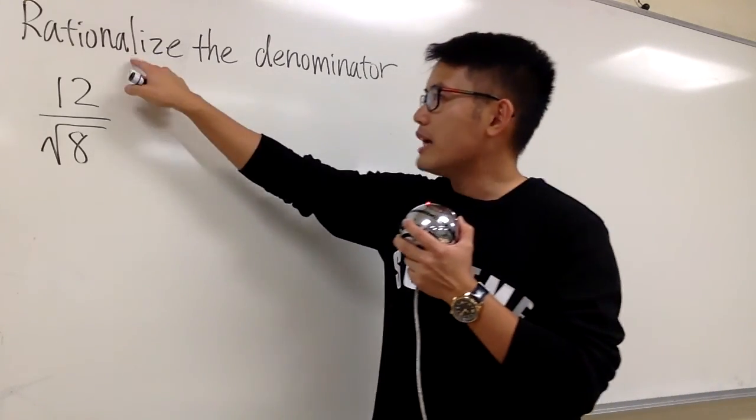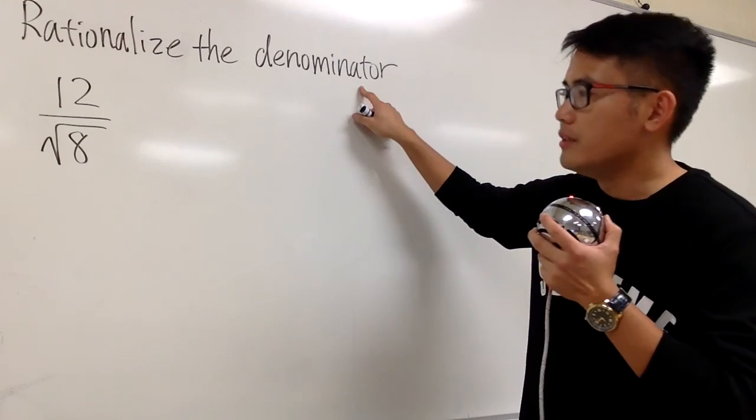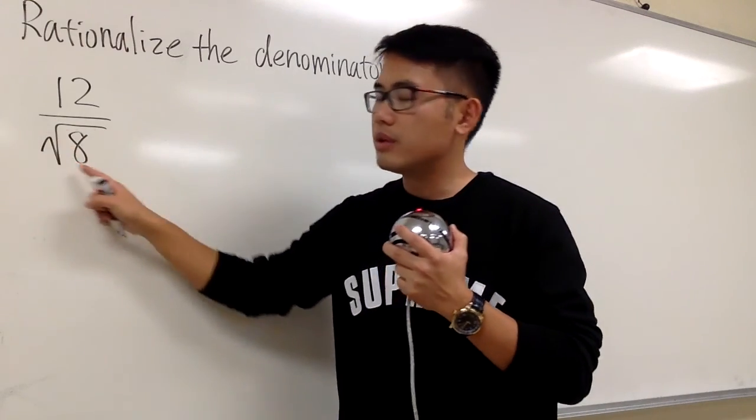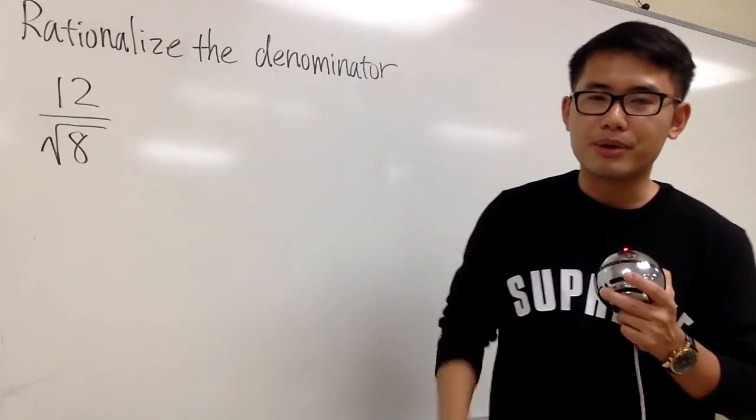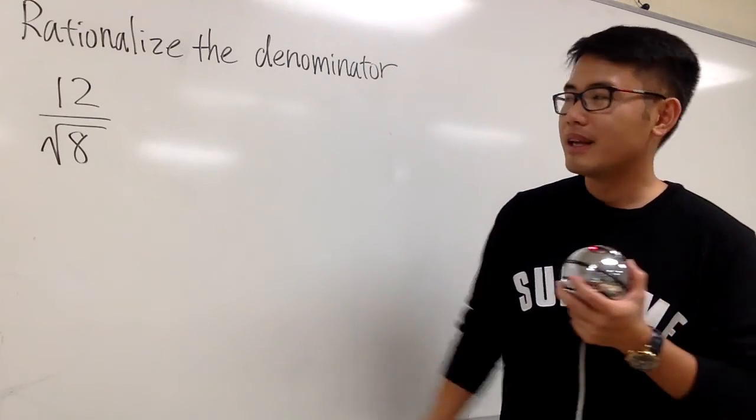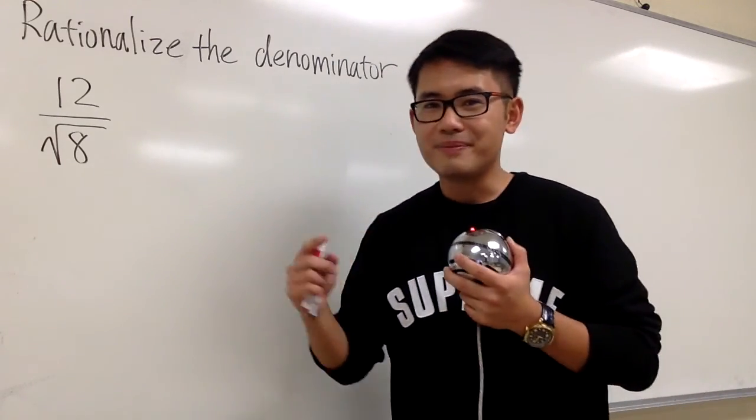Well, to rationalize the denominator, it means that we have to make sure somehow this denominator becomes a rational number. How can we do that? I'm going to show you guys two ways. Here's the first.